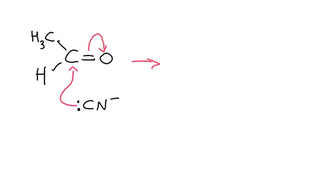What this makes is an anion. The anion has an oxygen which has a negative charge and a lone pair. The cyanide has now attached, and we've still got the hydrogen and the methyl group.